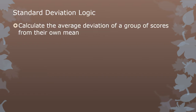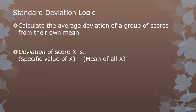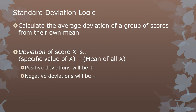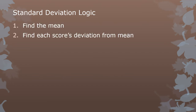We calculate the average deviation by finding a deviation for each individual value of X: we take a specific value of X and subtract from it the mean of all the X's. We go X minus X-bar rather than X-bar minus X because when we do deviations this way, numbers higher than the mean will have a positive deviation, and numbers lower than their own mean will have a negative deviation. That's extremely intuitive and useful. So we find the mean, and we calculate each score's deviation from the mean.